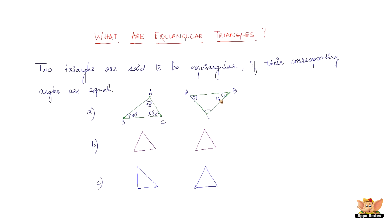So this angle is 30 degrees, this is 90 degrees, and this is 60 degrees. You can easily say now they are equiangular because the corresponding angles are equal to each other.